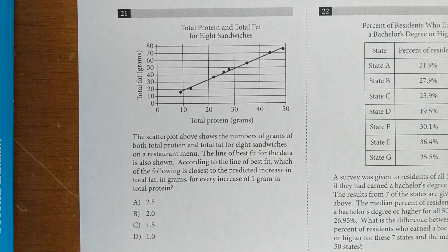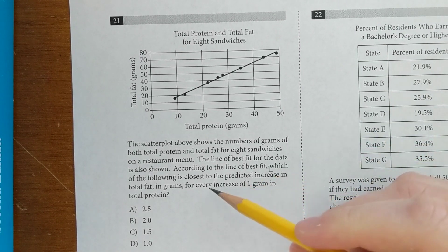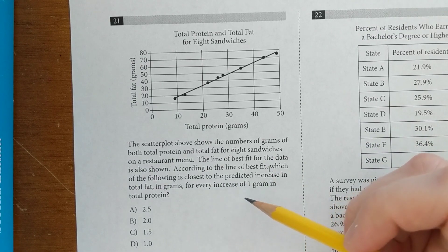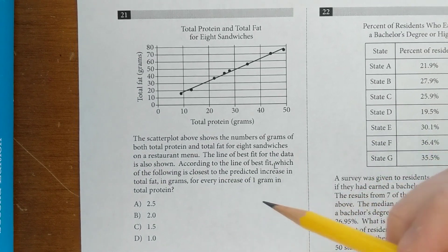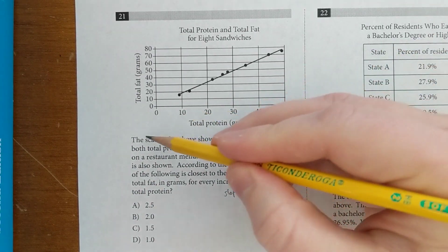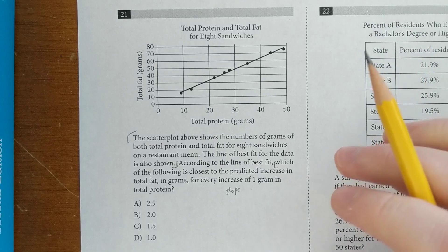Here's another example of this. The actual question is here. Which of the following is closest to the predicted increase in total fat in grams for every increase in one gram in total protein? So basically it's a slope question after all this text. So this whole part here really doesn't affect what you need to do at all.